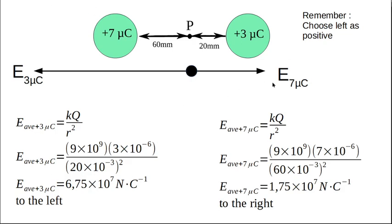Now for the 7 microcoulomb charge — write E subscript 7μC so it's clear which calculation this is. E = kQ/r², using 9×10⁹ as Coulomb's constant, 7×10⁻⁶ for the charge, and 60×10⁻³ metres for the distance (60 mm, in SI units). Put it all in your calculator and you get 1.75×10⁷ N/C, but it is to the right.